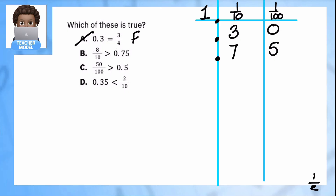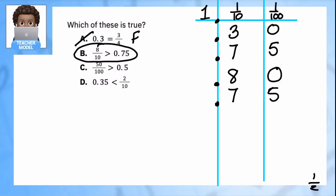Let's go to option B. I have 8 tenths, which goes in the tenths place, giving me 0.80. The other value is 0.75. Adding a placeholder, I can compare: 80 hundredths vs. 75 hundredths. The statement says 80 hundredths is greater than 75 hundredths — that is true! It's very easy to see: 80 is bigger than 75, so option B is correct.